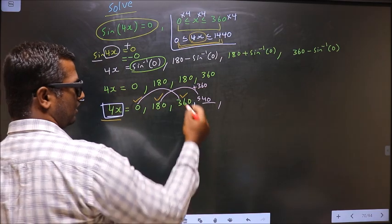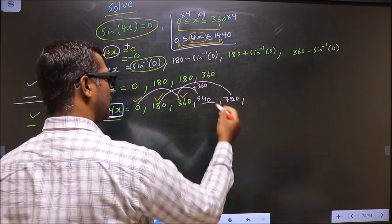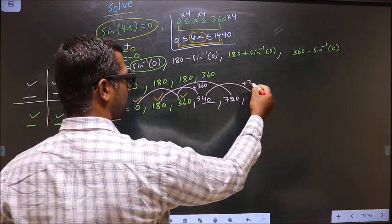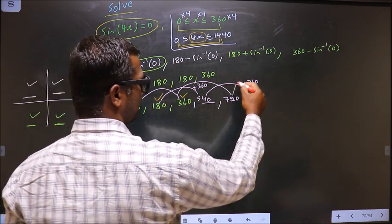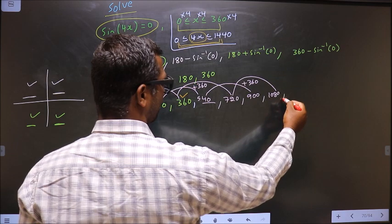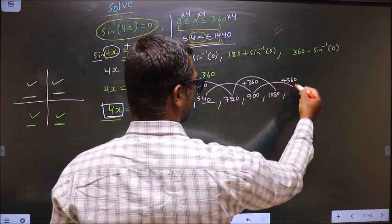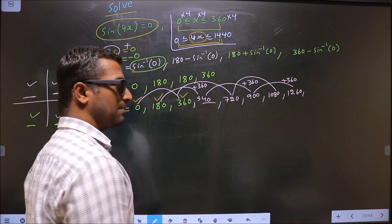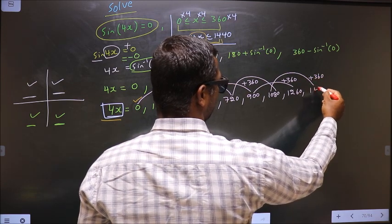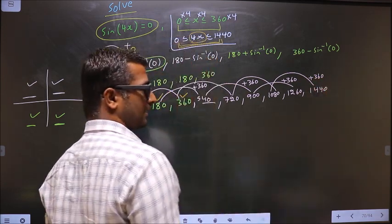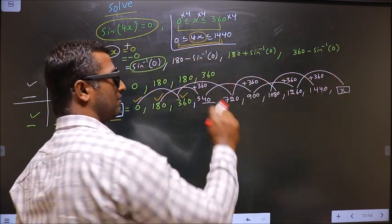Continuing: add 360 to 360 to get 720 — lies in interval, accept. Add 360 to 540 to get 900 — accept. Add 360 to 720 to get 1080 — accept. Add 360 to 900 to get 1260 — accept. Add 360 to 1080 to get 1440 — accept. Adding 360 further gives a value that does not lie in the interval, so reject that.